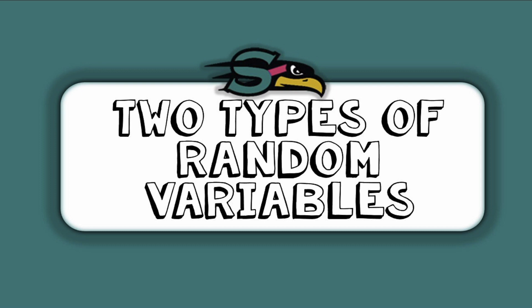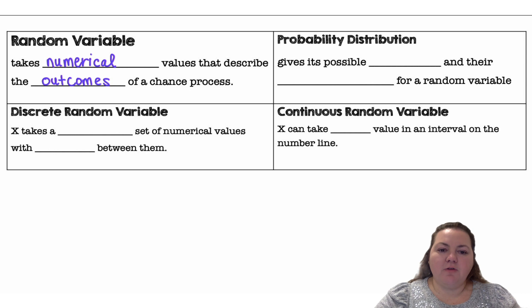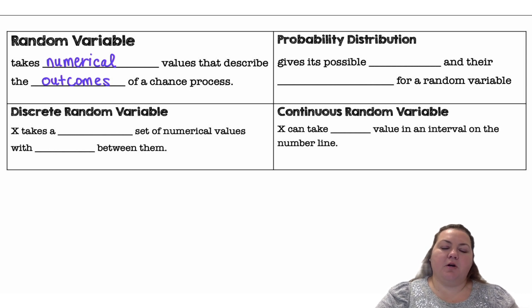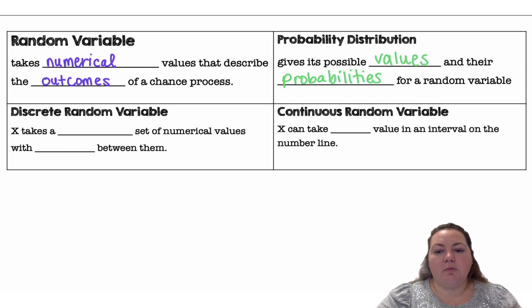Hey there, Seahawks. It's Ms. Adams, and in this video, we're going to learn about two types of random variables. A random variable takes numerical values that describe the outcomes of a chance process. The probability distribution gives its possible values and their probabilities for a random variable.